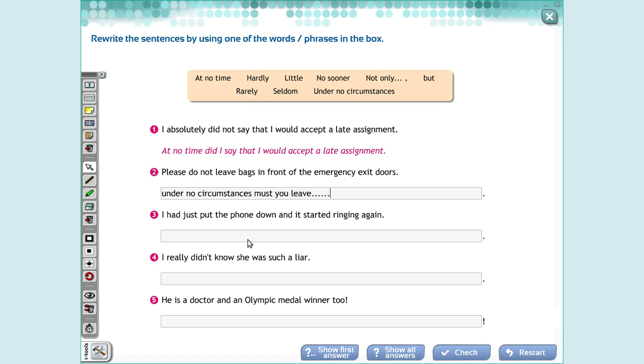I had just put the phone down and it started ringing again. We have two actions. Action number one. You put the phone down. Action number two. It started ringing again. When I have two actions I use no sooner, hardly, barely. In this case, we can use no sooner. No sooner had I put the phone down than it started ringing again. Remember that no sooner, I don't use when. I use than.